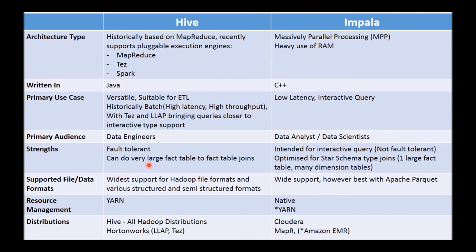The kinds of queries you'd typically run on these two systems can also differ. Impala is really geared toward analytical-type queries. If you come from a data warehousing background, you'll be familiar with facts, dimensions, and star schema design. Impala is typically used when you have a star schema and want to join a large fact table with n number of dimension tables.